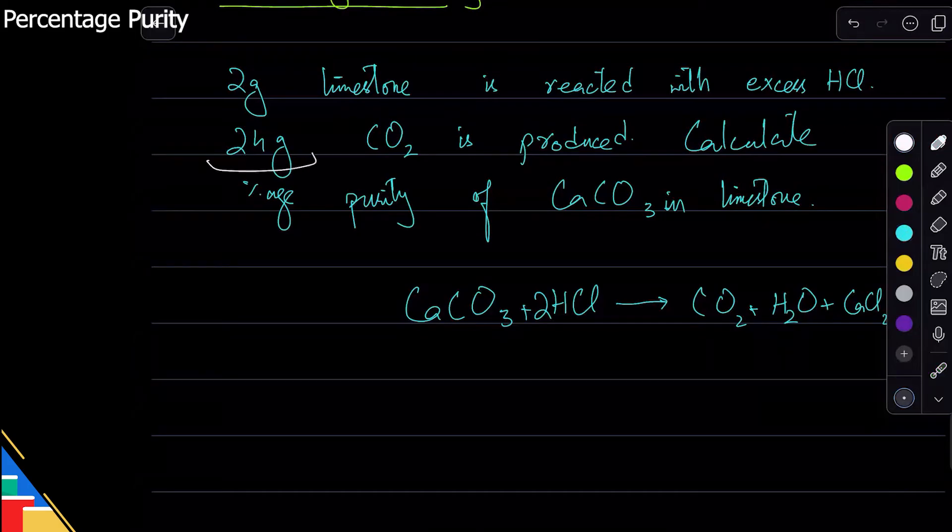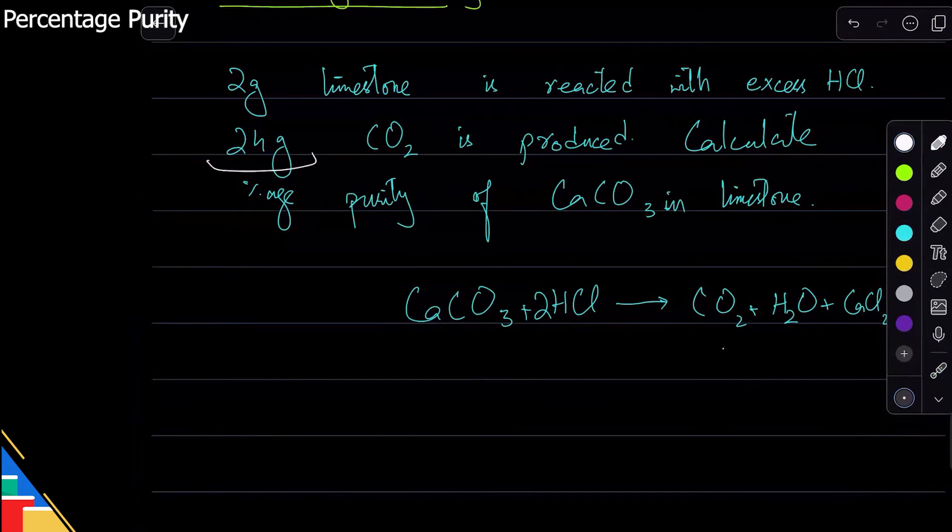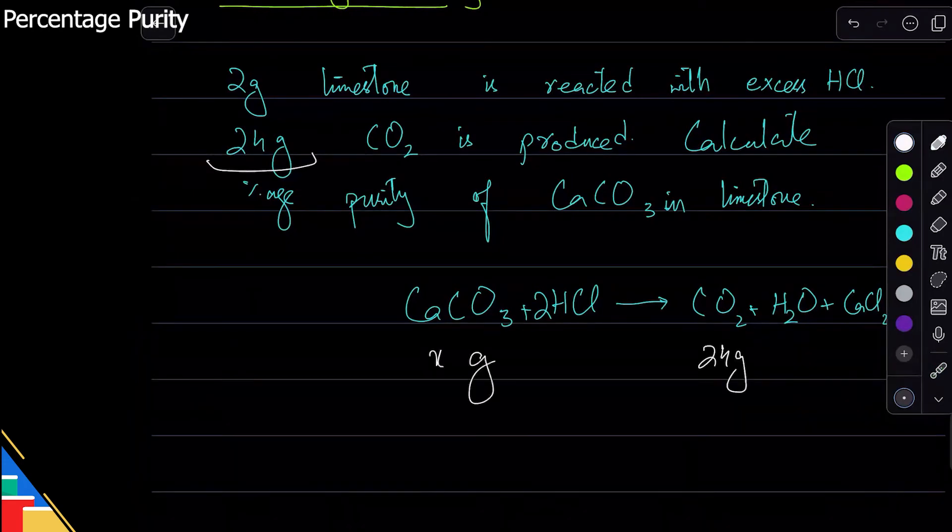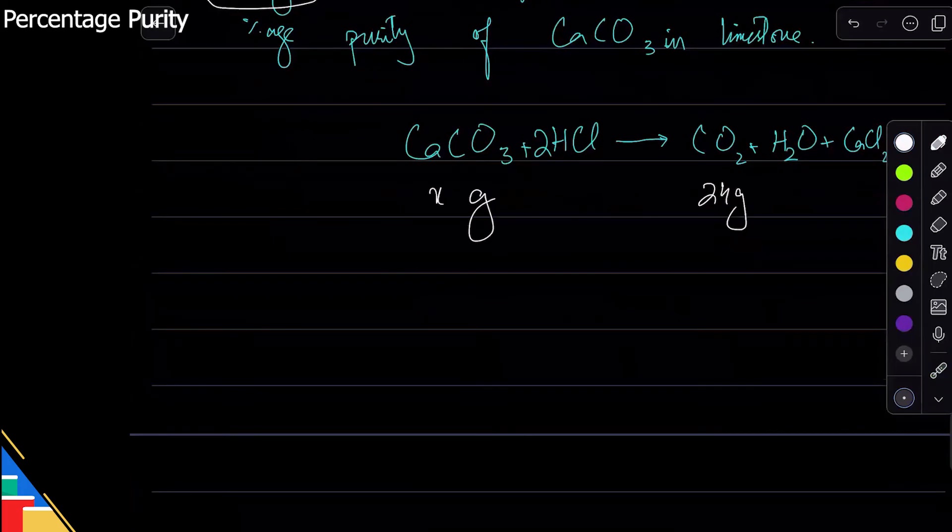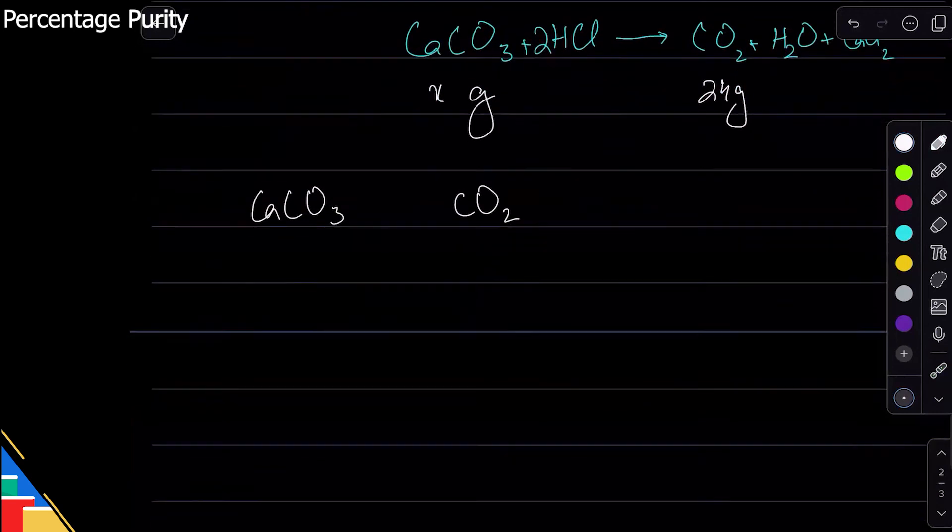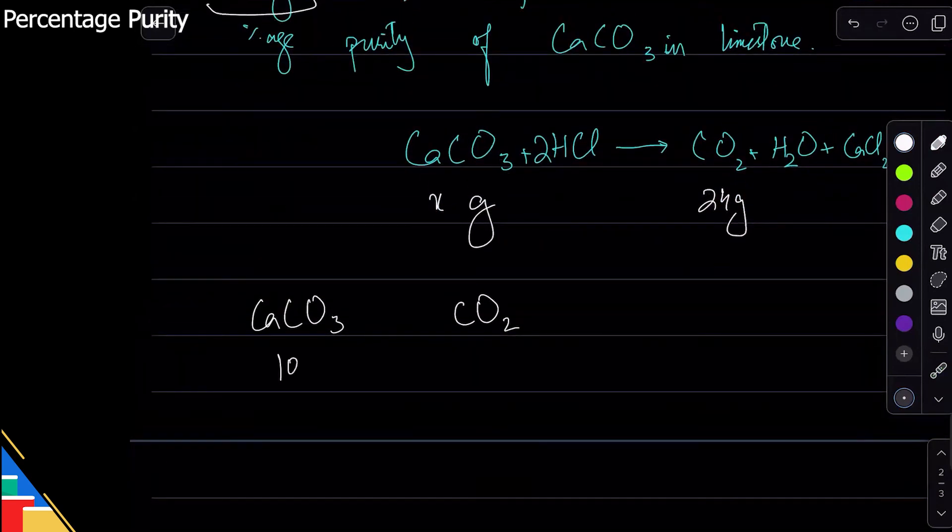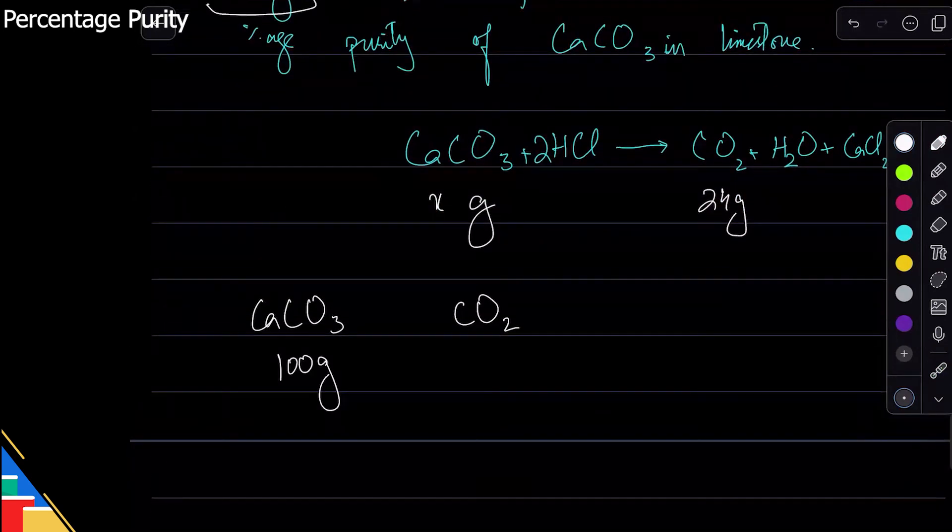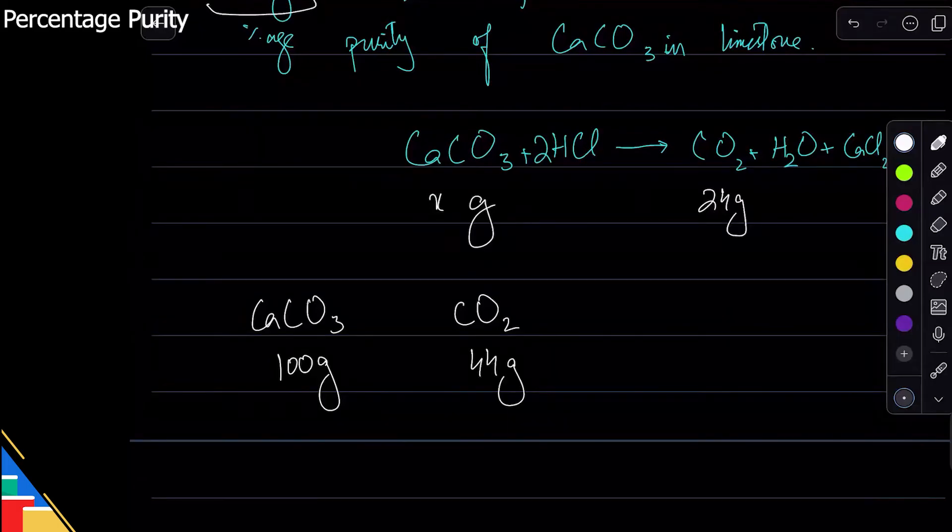I have 24 gram carbon dioxide, so this is 24 grams. I will try to find out how much of this I have. So again, if I use the ratio method: calcium carbonate and CO2. One mole of calcium carbonate is 100 grams, that's the Mr. One mole of carbon dioxide is 44 grams. So 100 grams of this produces 44 grams of this.